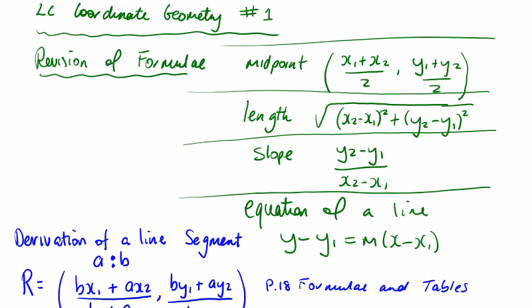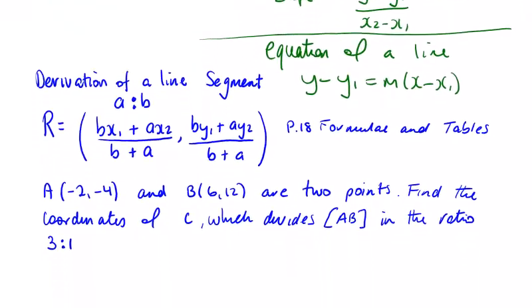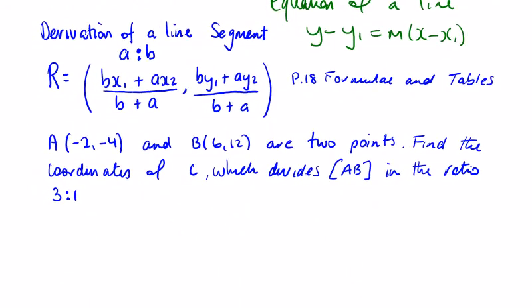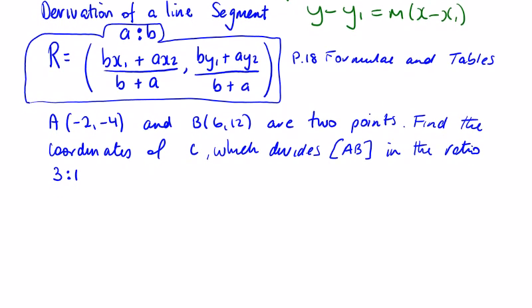So in Leaving Cert Coordinate Geometry we're going to be introduced to a new formula. The first one is the derivation of a line segment in the ratio A to B, and this is the formula that's given on page 18 of the formula booklet. Now I think there's a better approach than using the formula, so a logical approach to these questions is always the best way in maths, but I'll do it both ways.